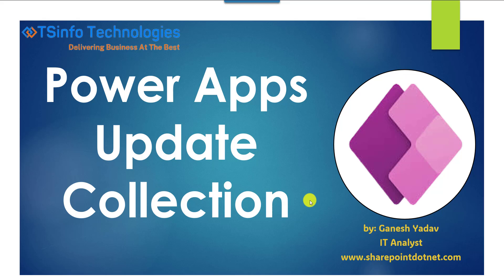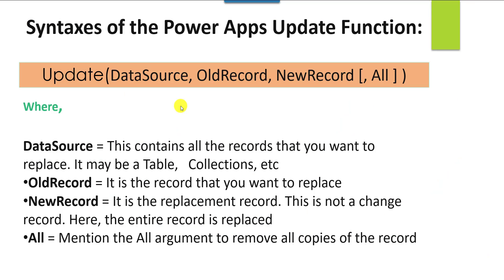If you want to update a collection item in PowerApps, you can use two different functions. The first is the Update function. The PowerApps Update function is used to replace an entire record in a data source. The syntax is: Update(DataSource, OldRecord, NewRecord, All).